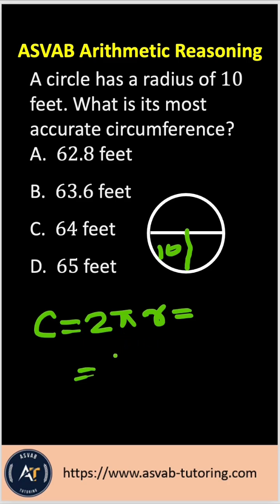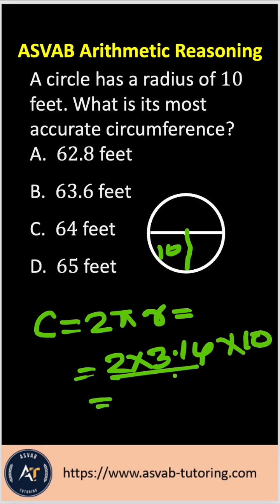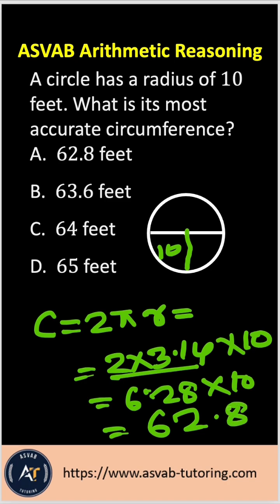So that gives you 2 times 3.14, because the pi is 3.14, times 10. Now if you multiply this by 2, so that gives you 6.28 times 10. Now multiply by 10, that gives you 62.8. So the correct answer is option A.